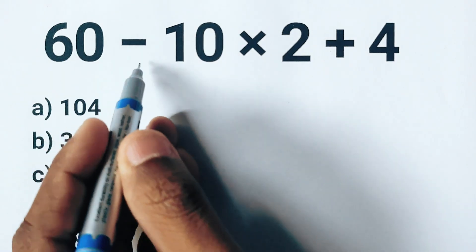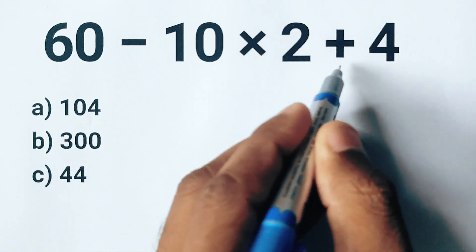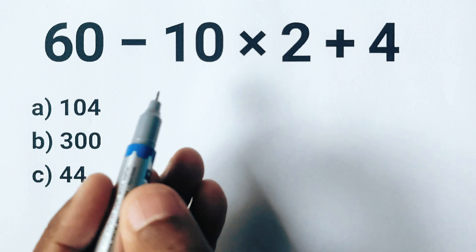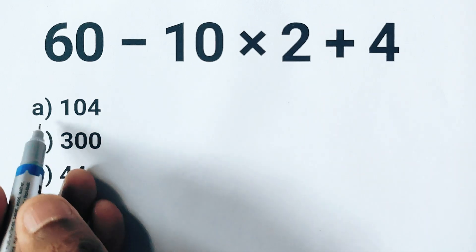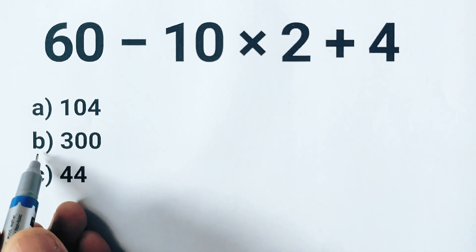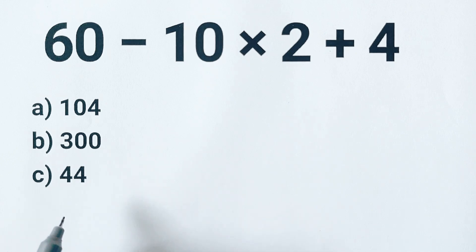Okay, here we have 60 minus 10 times 2 plus 4. Which is the correct answer? There are three options: option A is 104, B is 300, and C is 44. If you think you know the answer, go ahead and drop it in the comments because I'm going to solve this problem right now.